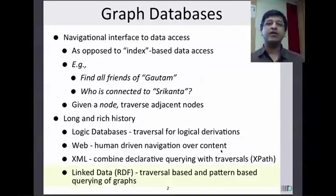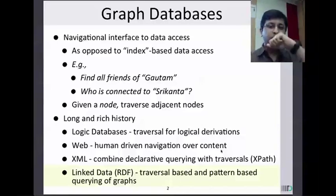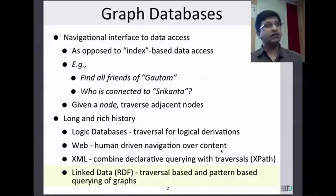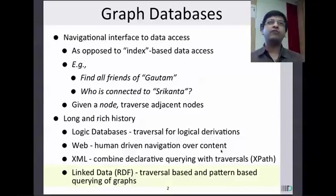Some examples of the kinds of questions you could ask on graph databases: find all friends of Gautam — you know Gautam and you want to find all relationships, filter for friendship, and locate the other end. This is a one-hop BFS with certain restrictions. You can also look at more complicated queries: find all nodes reachable from Shrikanta, not just single-hop connections. For instance, if you want to contact him and propagate your resume through his network, you'd want to know how many people he can reach.